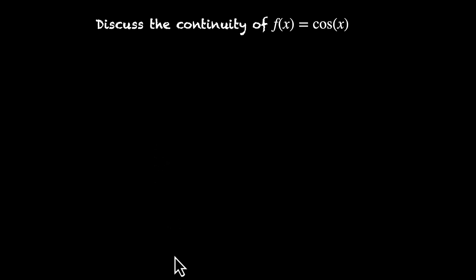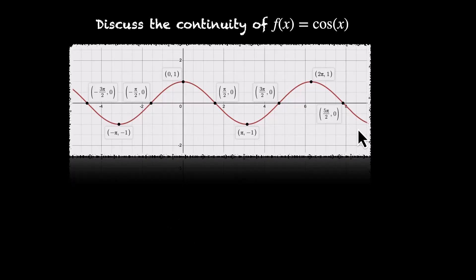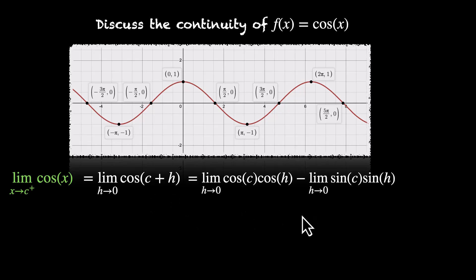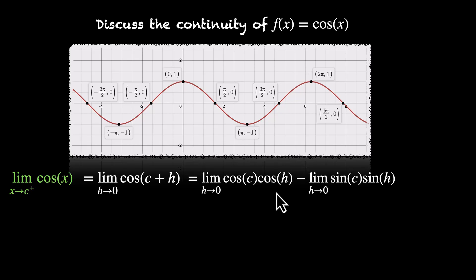We can follow very similar steps for cos(x). This is the graph of cos(x) — as we can see, it is continuous throughout. Let's prove it using limits. The right-hand limit: limit x→c⁺ of cos(x) = limit h→0 of cos(c + h). Applying cos(a + b) = cos(a)cos(b) − sin(a)sin(b), that's limit h→0 of [cos(c)cos(h) − sin(c)sin(h)]. Since limit h→0 of sin(h) = 0 and limit h→0 of cos(h) = 1, this becomes cos(c) · 1 = cos(c).